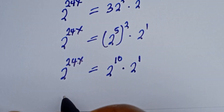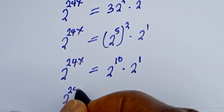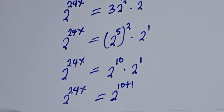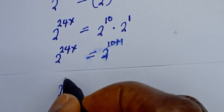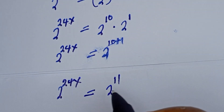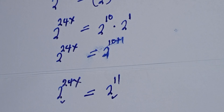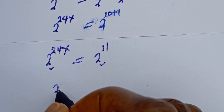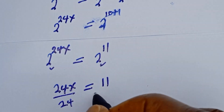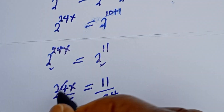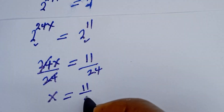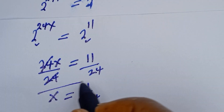We get 2 to the power of 24s is equal to 2 to the power of 11. Because of the same base, we equate the exponents: 24s equals 11, so s is equal to 11 over 24. This is the final answer.